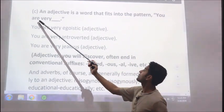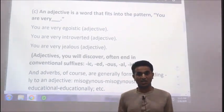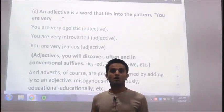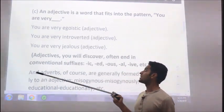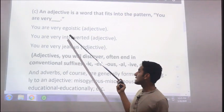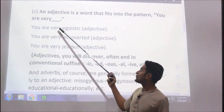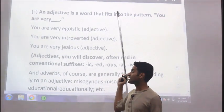The pattern is: you are very. Whenever a word confuses you, whether it's an adjective, or a noun, or a verb, then don't be confused. Just take that word and try to fit it into this pattern, and if it fits well, then it's an adjective. Let's take examples. You are very egoistic, it fits into it, so it's an adjective.